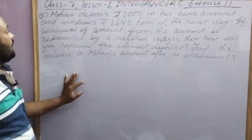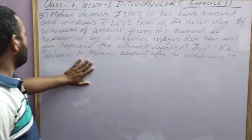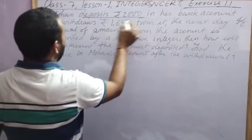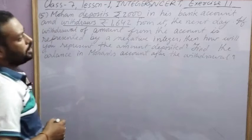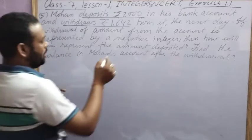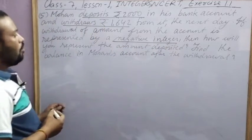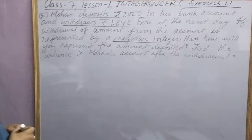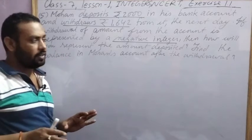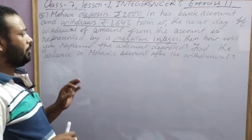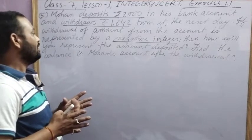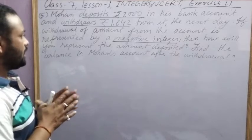Question Number 5: Mohan deposits rupees 2000 in his bank account and withdraws rupees 1642. Money deposited is this one, money withdrawn is this one. If withdrawal of the amount from the account is represented by negative number, then how will you represent the amount deposited? Find the balance in Mohan's account after the withdrawal. We have to find two things. First, how will you represent the deposited amount if withdrawal amount is represented by a negative number?